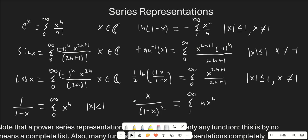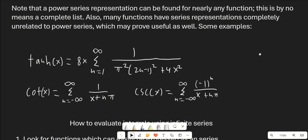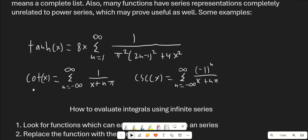Power series representations can be found for nearly any function, so this is not a complete list. Also, some functions have series representations completely unrelated to power series. For example, hyperbolic tangent of x equals 8x times the sum from n equals 1 to infinity of a certain rational expression, cotangent of x gives us another summation, and cosecant of x gives another summation. These are other ones to keep in mind, but of course power series are going to be the ones we use in general.